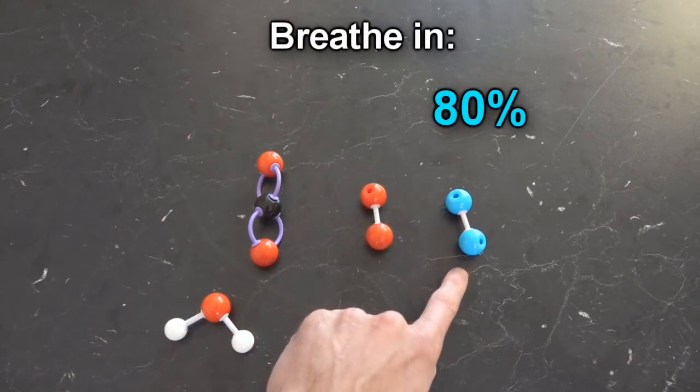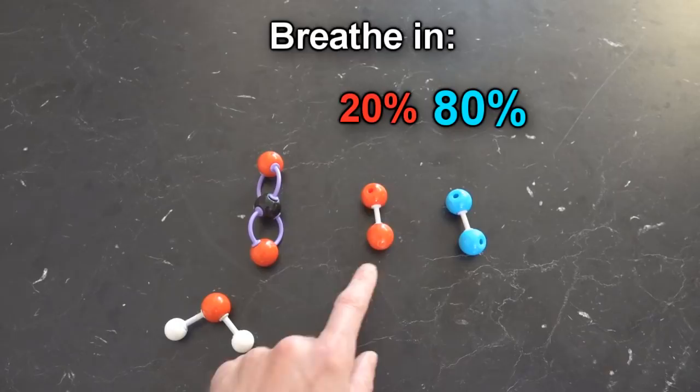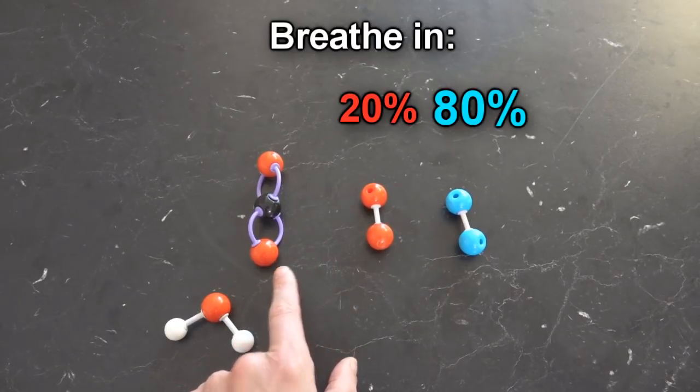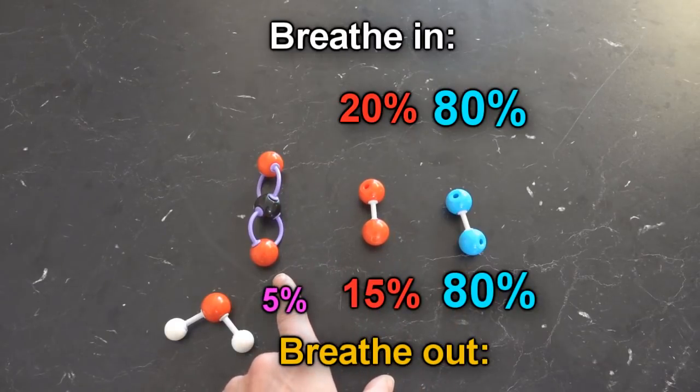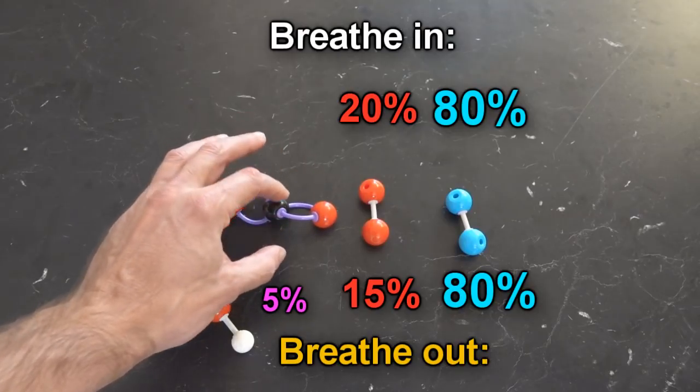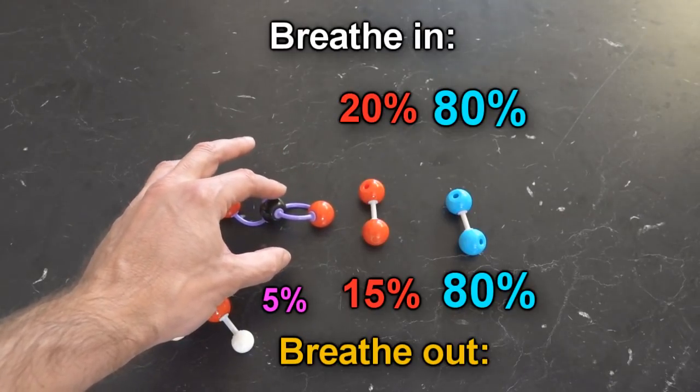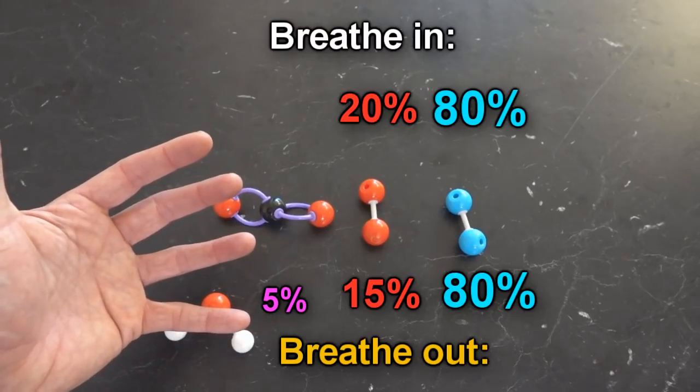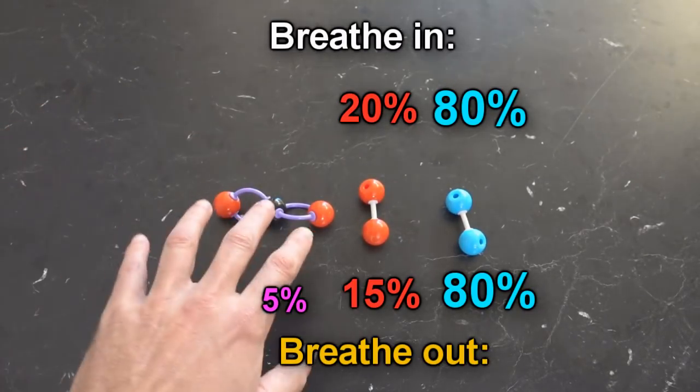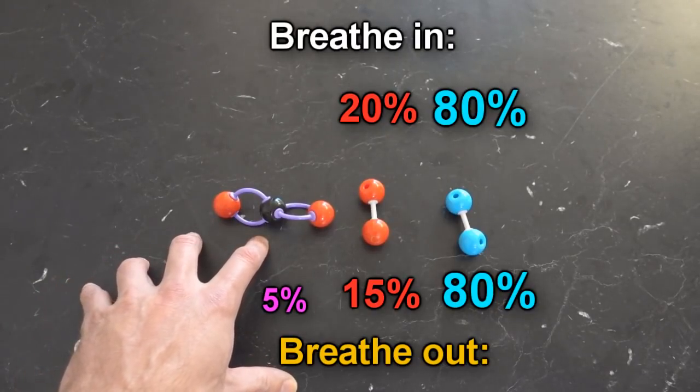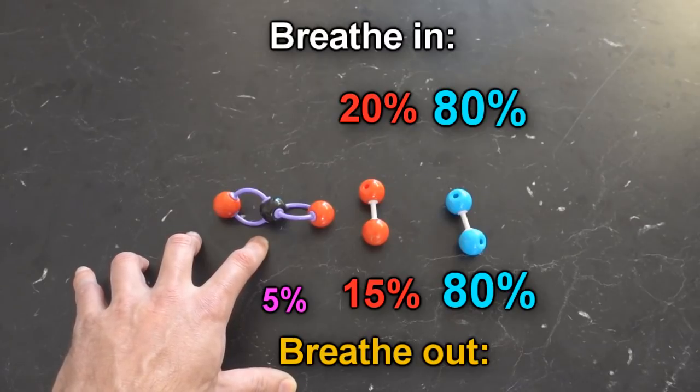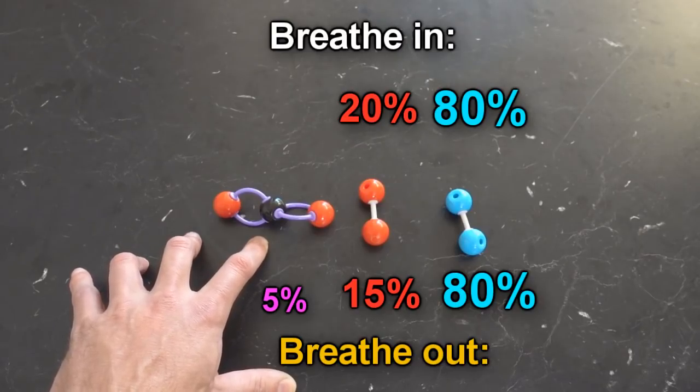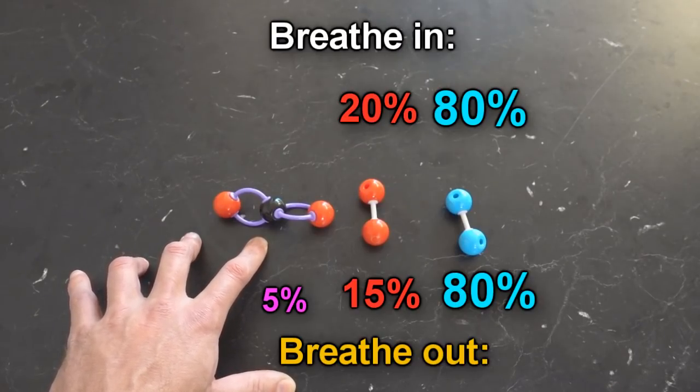So when you breathe air in, it's about 80%, 20%, 0% approximately. And when you breathe it out, it's 80%, 15%, and 5%. And the reason this is interesting is all of the carbon here actually came from your body. It turns out that you excrete most of the weight that you lose through your mouth. So we all essentially get most of our weight in through our mouth, and we excrete most of the weight that we get rid of through our mouths.